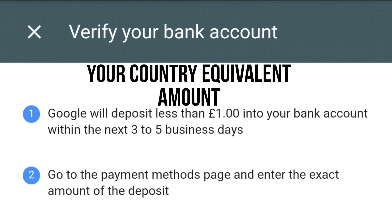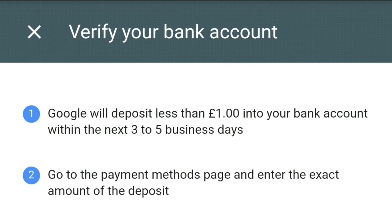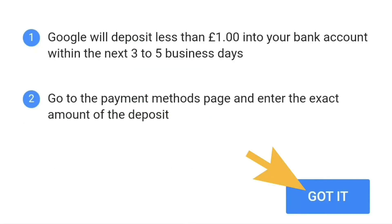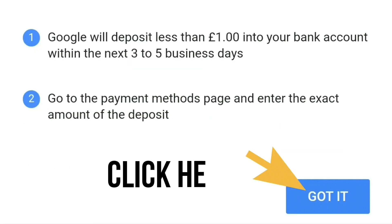The next thing you'll see pop up says: 'Google will deposit less than one pound into your bank account within the next three to five business days. Go to the payment methods page and enter the exact amount of the deposit.' Then just press 'Got it'.